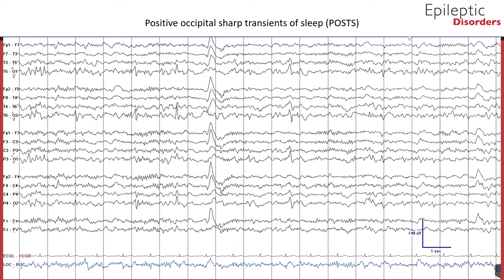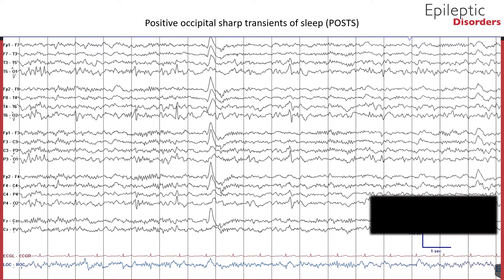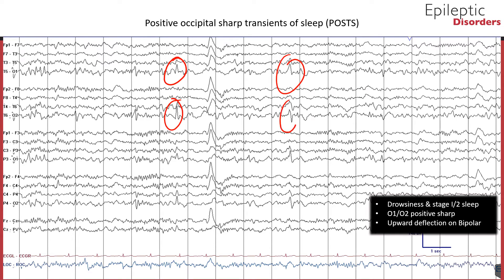POSTS are another important physiologic potential that becomes more apparent in deep drowsiness and persists during light sleep and deep sleep. It is most commonly found in adolescents and young adults, and these potentials are found in about 50% to 80% of a healthy adult population. In this bipolar montage, you can see POSTS outlined in red in the O1 and O2 channels. Also note in this montage, K-complexes outlined in the red square, as well as sleep spindles starred, suggesting that this is stage 2 sleep.